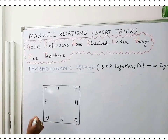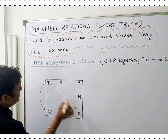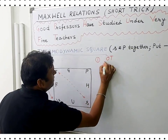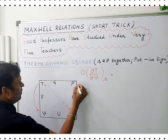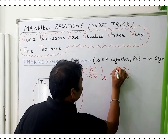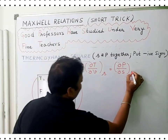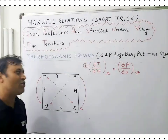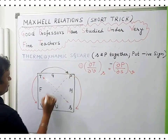Now, how to write the Maxwell relations. Starting with the first expression: del T by del V at constant S (entropy) is equal to del P by del S, and the diagonally opposite parameter is constant at constant V. When S and P are coming together, you should not forget to put a negative sign. That is the first expression.